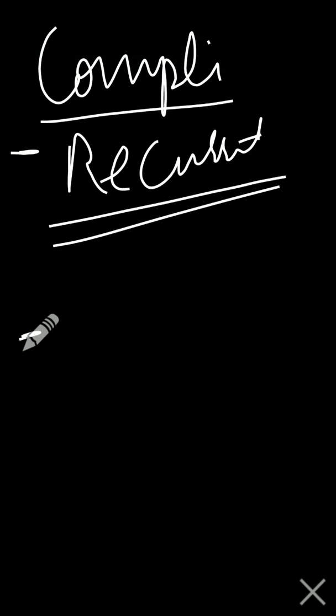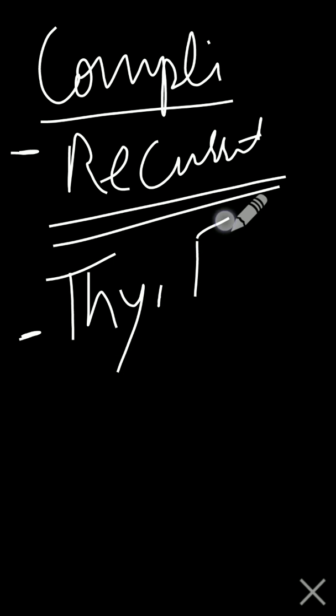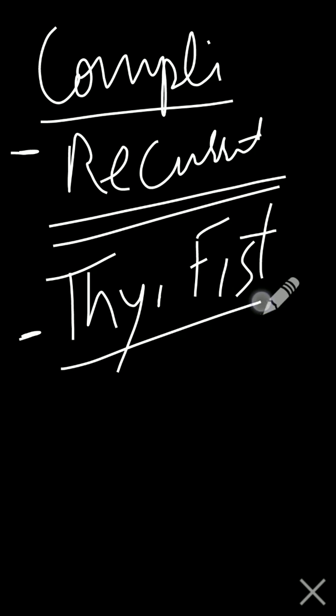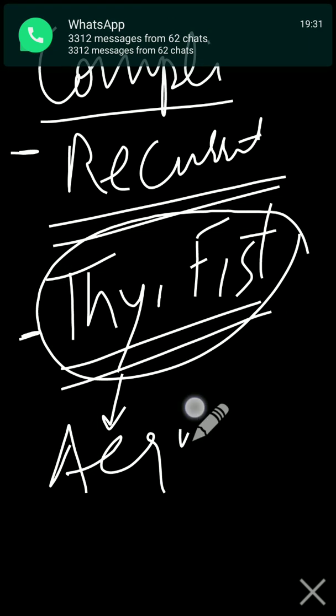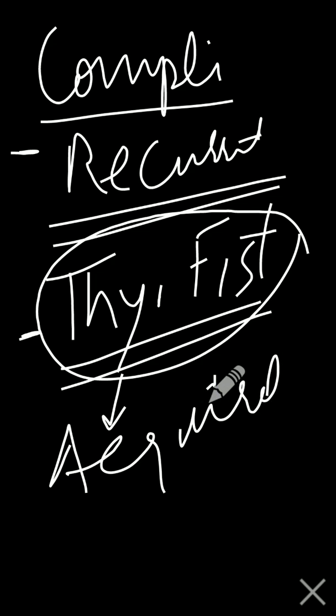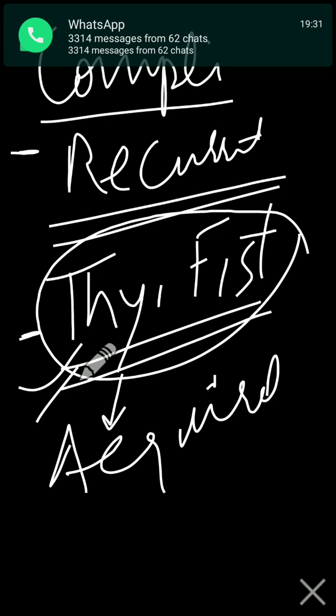Complications that can occur include recurrent infection within the cyst. The cyst may burst open through the skin, leading to the formation of a thyroglossal fistula. Thyroglossal cyst is a congenital condition while thyroglossal fistula is an acquired condition. Fistula can form due to recurrent infection or if the cyst is not completely removed during surgery.